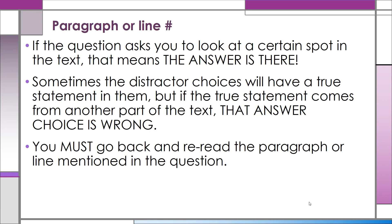Let's look closer. When we think about paragraphs or line numbers, if the question asks you to look at a certain spot in the text, that means the answer is going to be there. Sometimes the distractor choices will have a true statement in them, but if the true statement comes from another part of the text, that answer choice is wrong. You must go back and re-read the paragraph or line mentioned in the question if you want to get a question right that has a paragraph or line number.